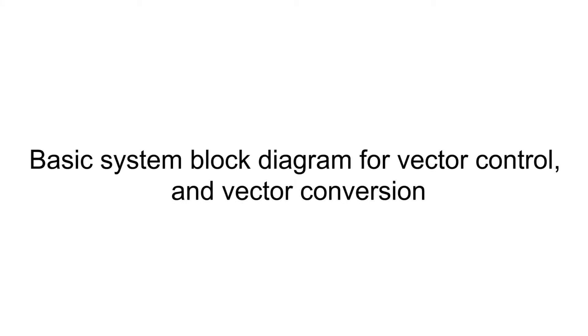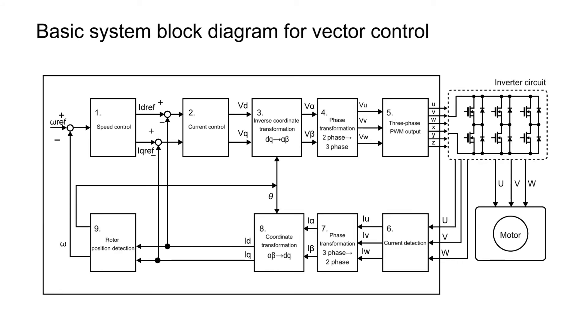Let's look at the basic system block diagram for vector control. First, vector control begins from monitoring the waveforms of U, V, and W, which drive a motor.